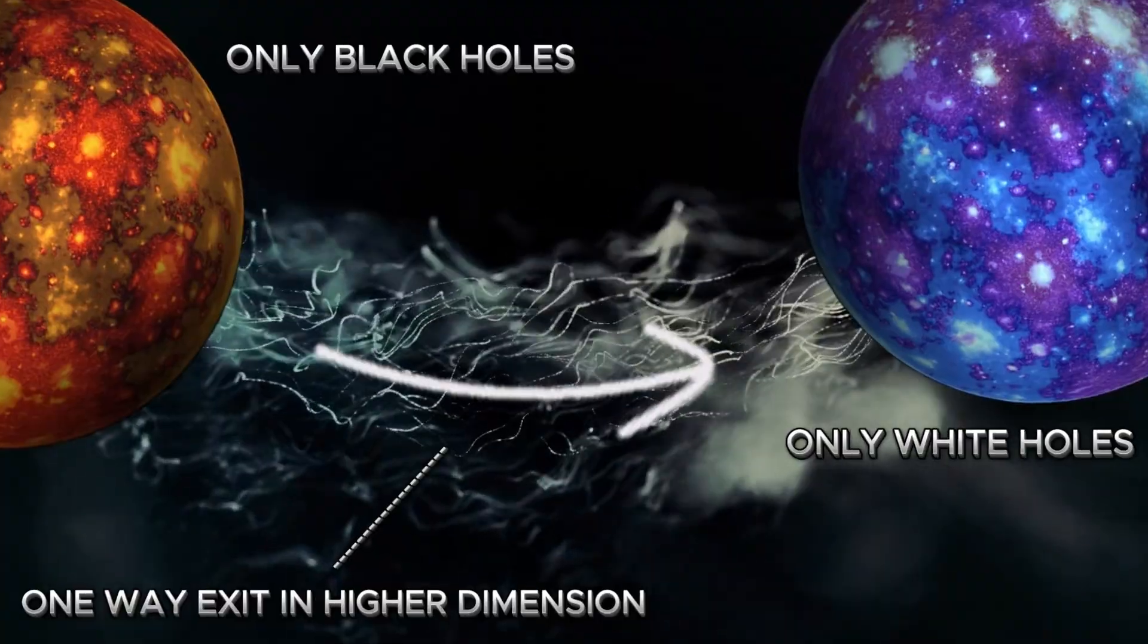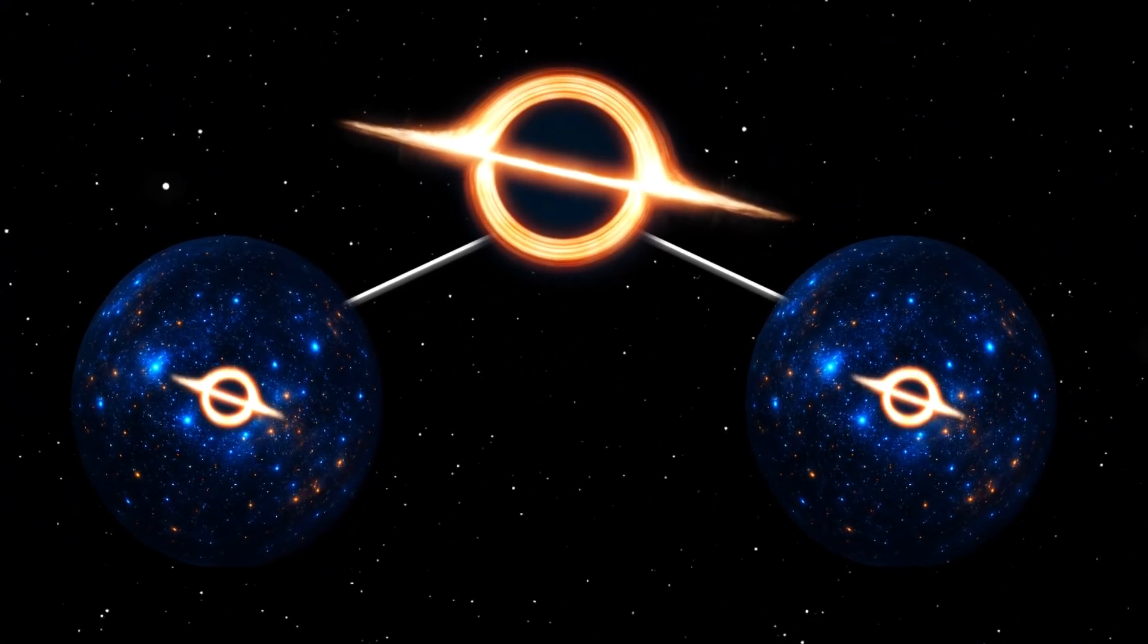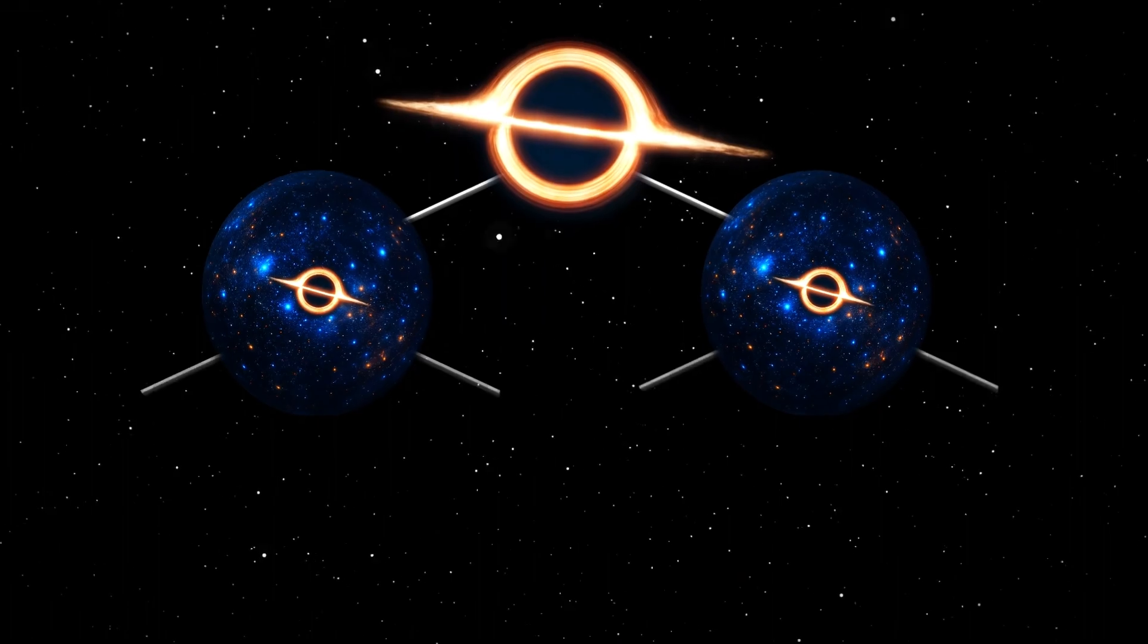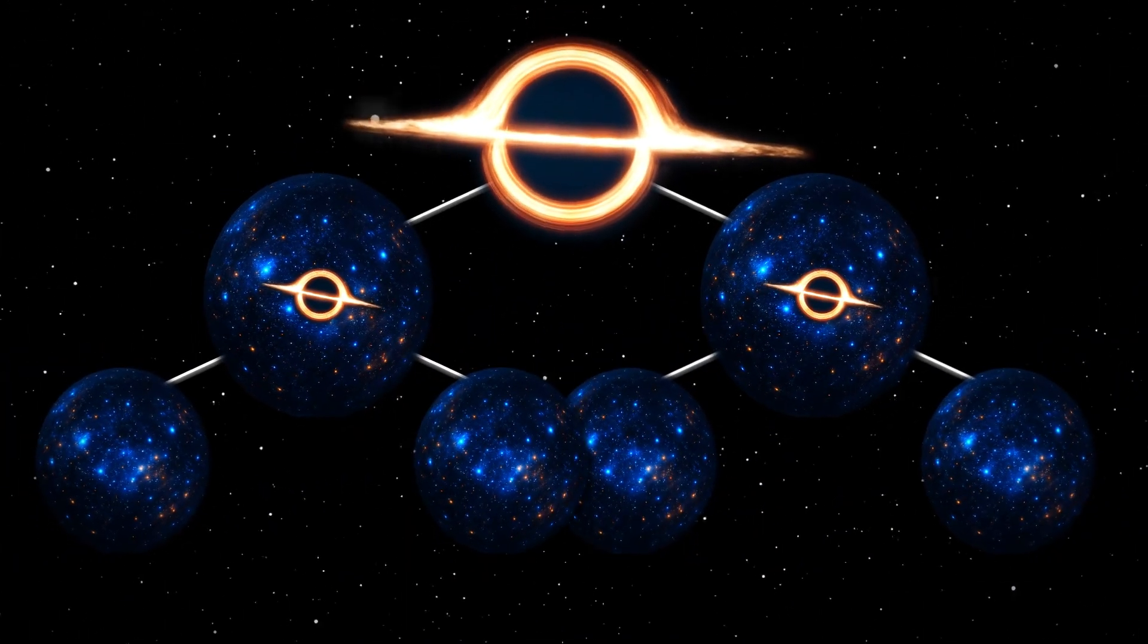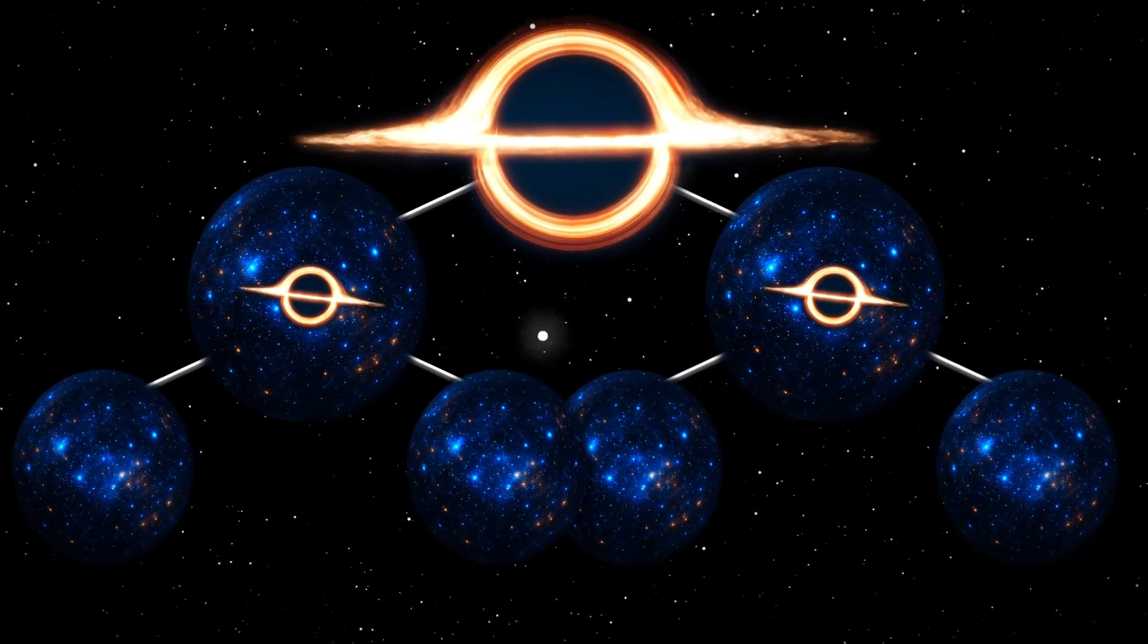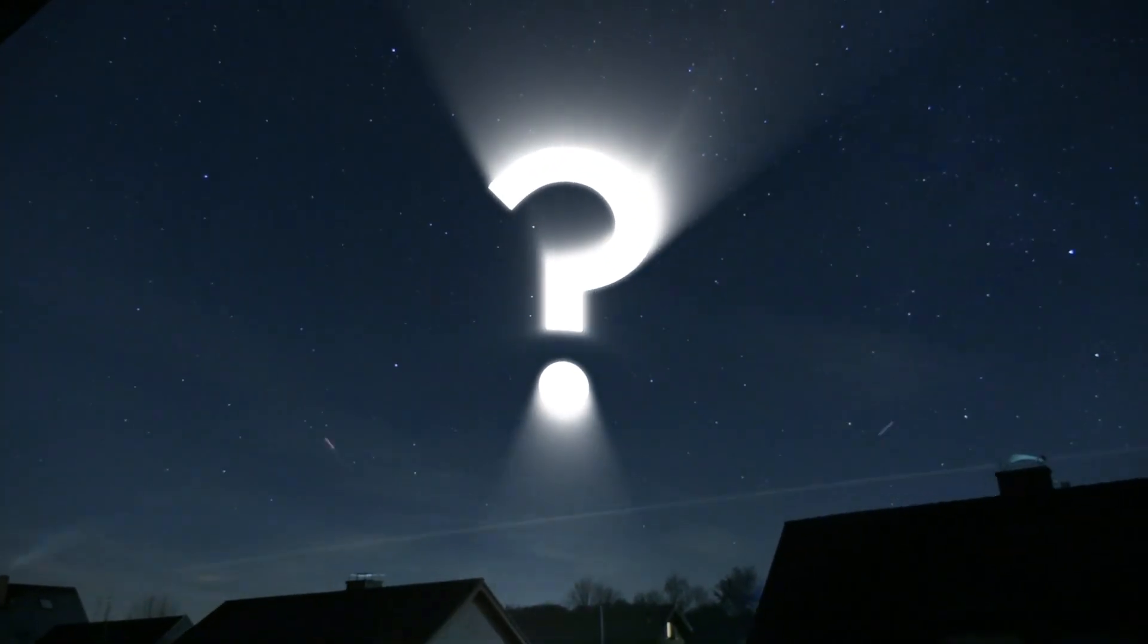In this framework, our universe could be just one link in a chain. Black holes in our cosmos might constantly create new universes on the other side. Those baby universes could have different physical constants, different particles, or even entirely different laws of physics.